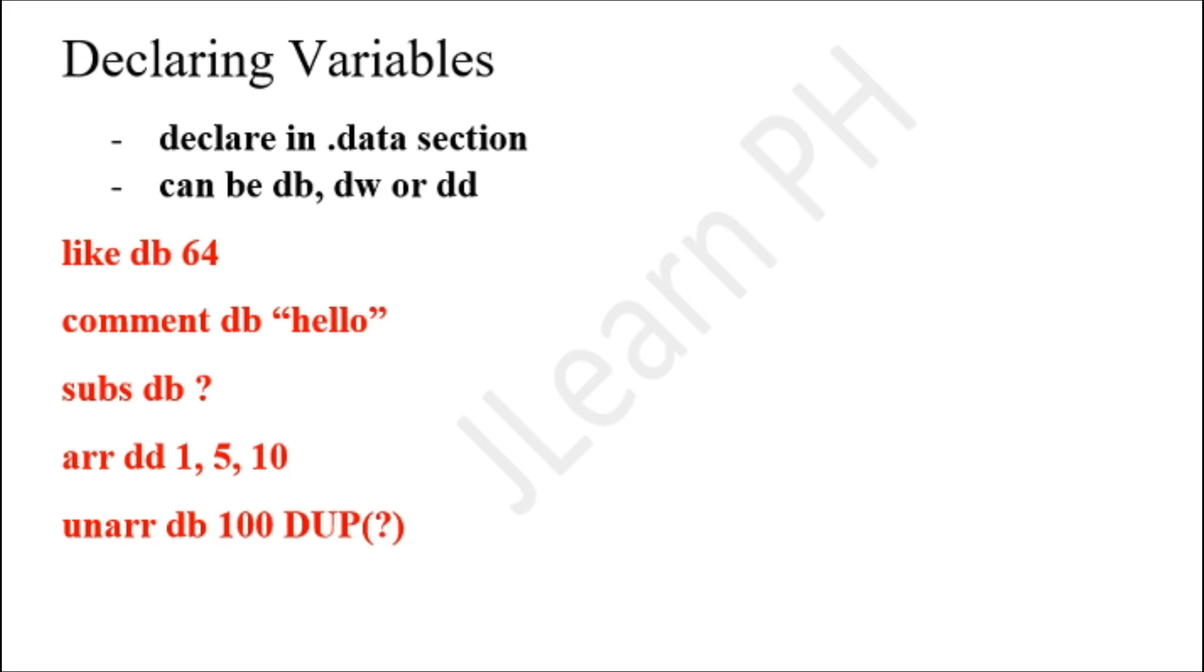You can also declare arrays in assembly. You can do 'arr dd 1, 5, 10', so this basically declares three four-byte values that are initialized to 1, 5, and 10.